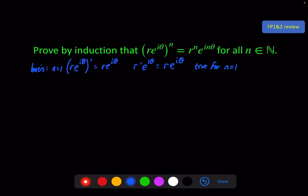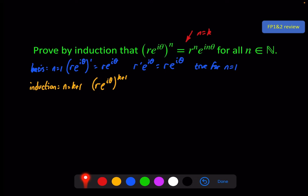Then we have our assumption, which is this statement when n is equal to k. I won't write that out due to space. Then we go to our inductive step, which is to show that if it's true when n equals k, it is also true for n equals k plus 1. So we have (Re^(iθ))^(k+1). We can break this into its pieces: (Re^(iθ))^k times Re^(iθ). Then we apply our assumption to the first factor, giving us R^k e^(ikθ).